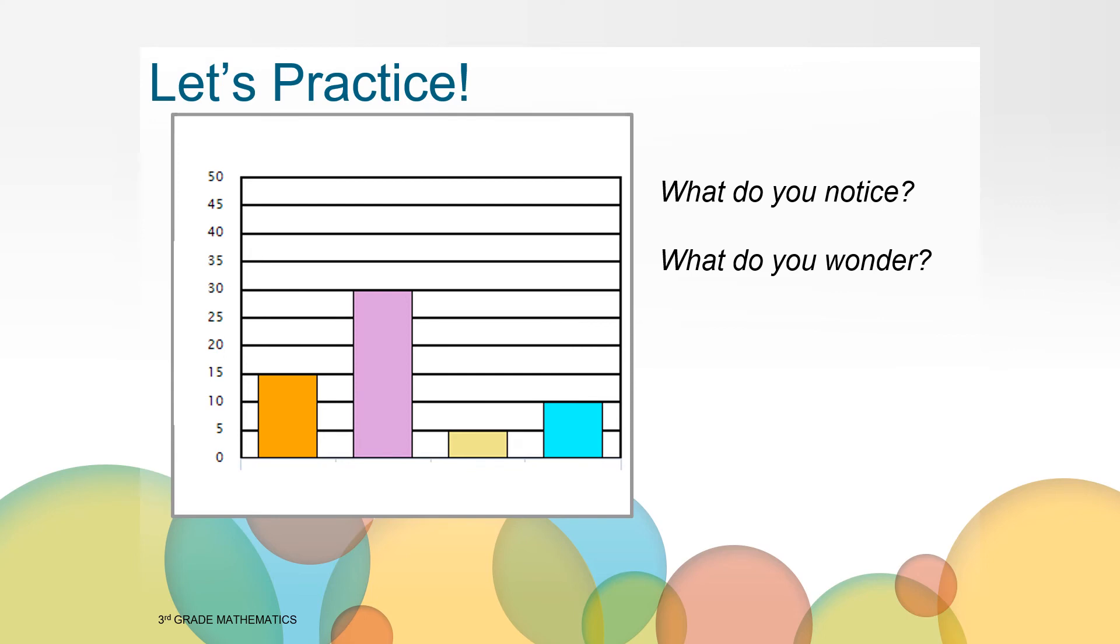Let's practice what we've learned about representing data in bar graphs by zooming in on this new graph. Take a moment to take a closer look at this graph and write down what you notice and what you might be wondering about this graph based on what you can see so far. Let's talk about the bars. Did you notice that they are different colors? Maybe you wondered if the different colors mean something special. Maybe you noticed that some of the bars are taller and some are shorter.